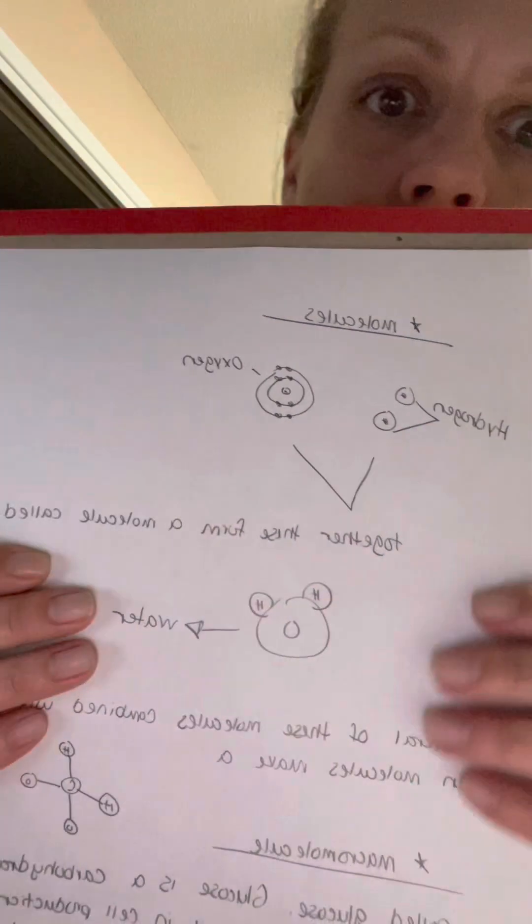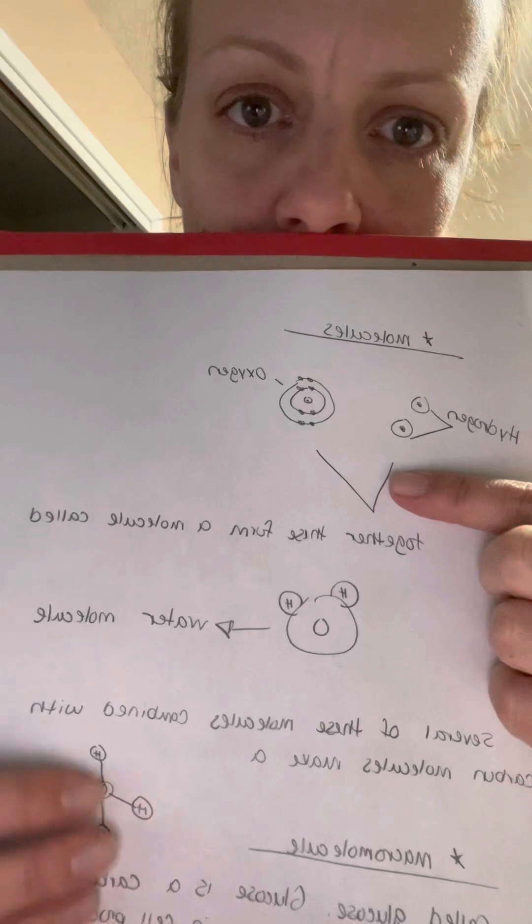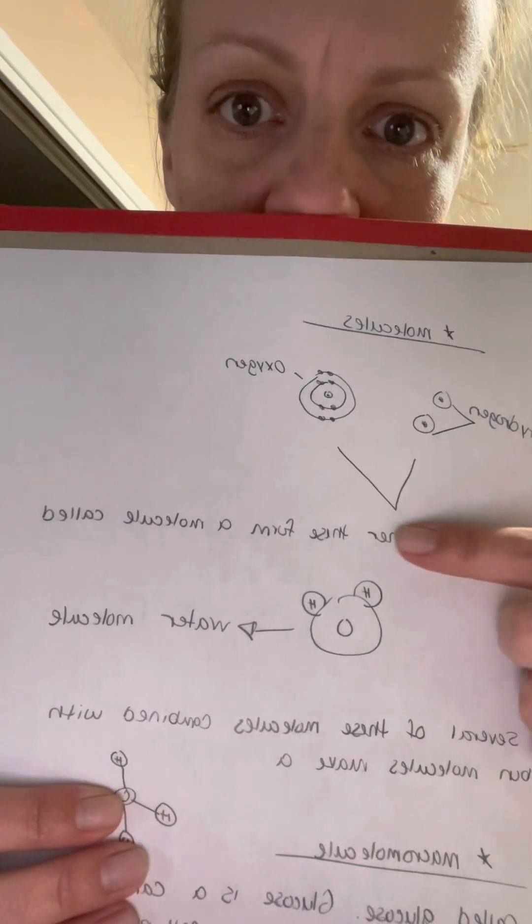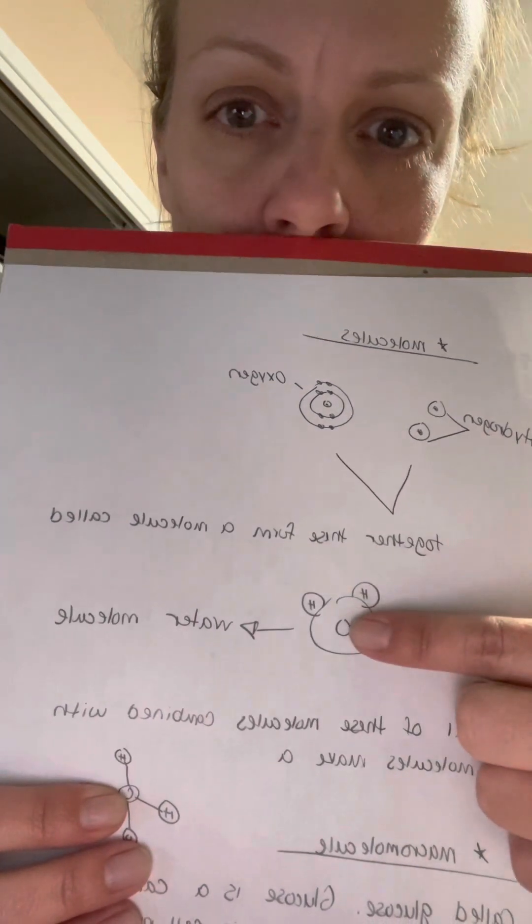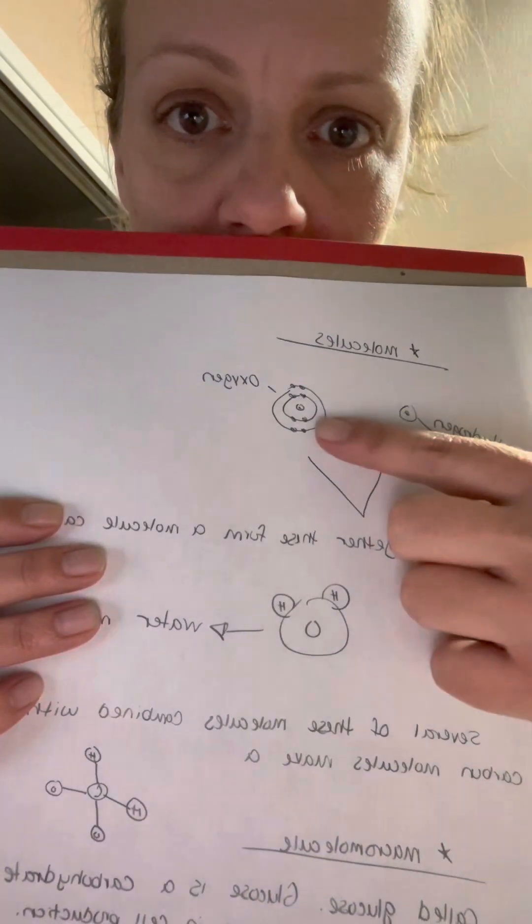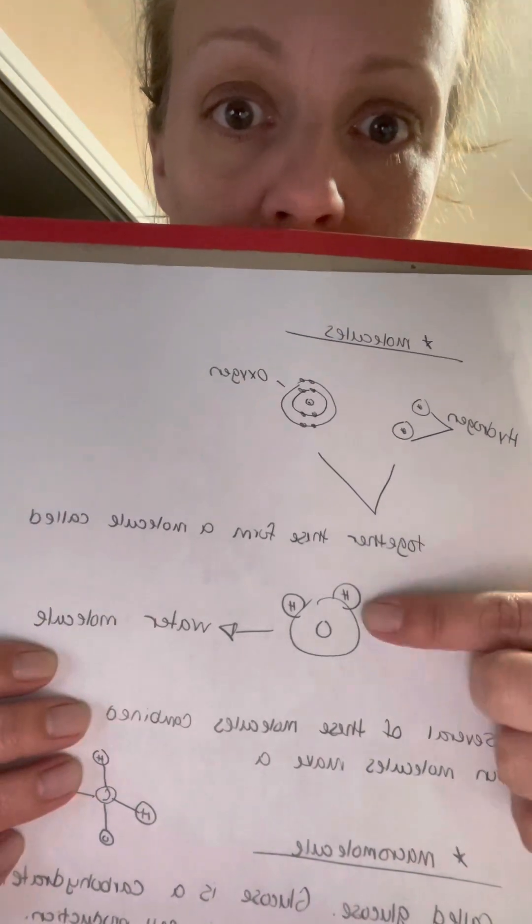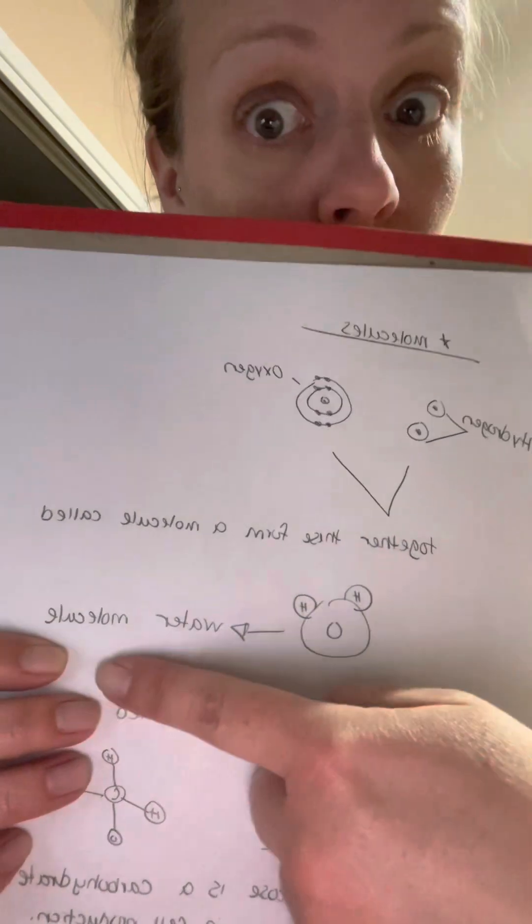Here we have a hydrogen and oxygen molecule together. These form a molecule called water. Sorry, we have hydrogen and oxygen atoms that form together to make a water molecule.